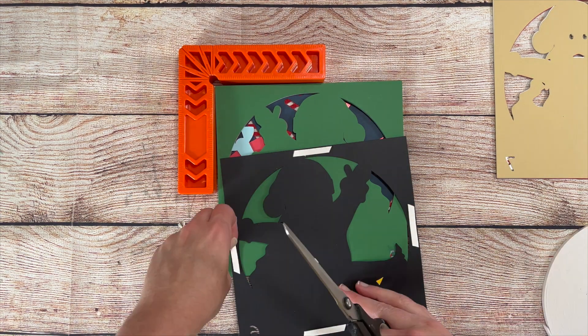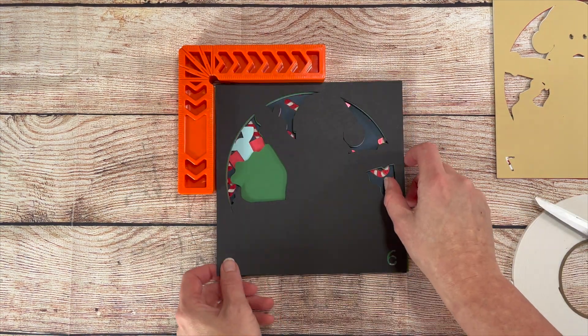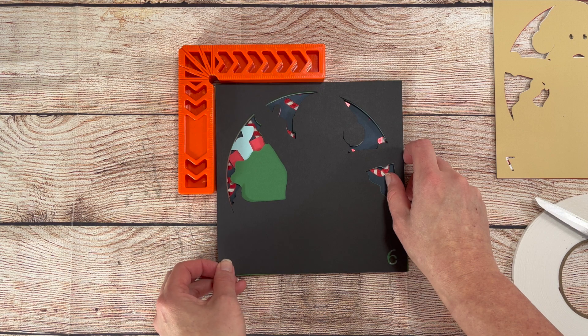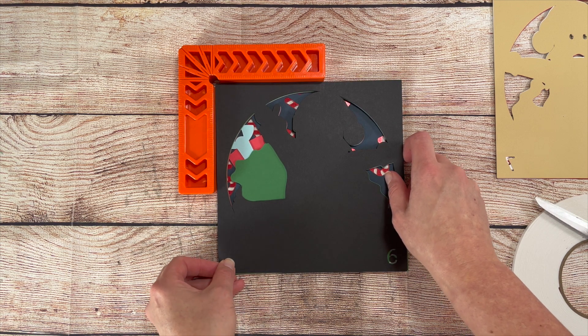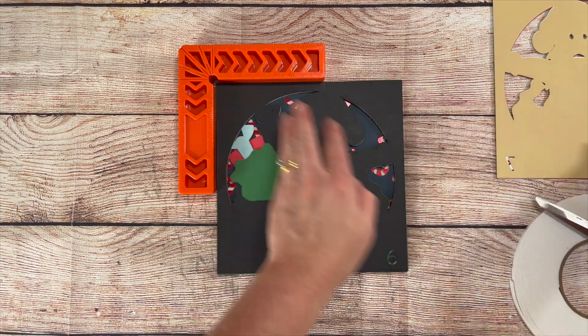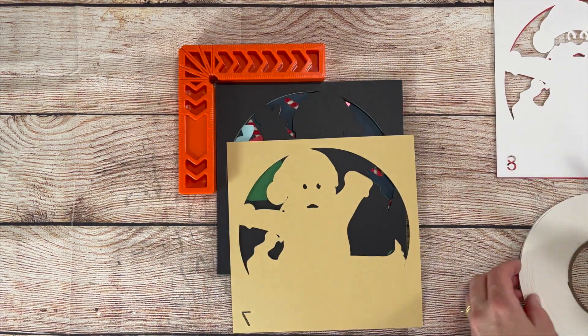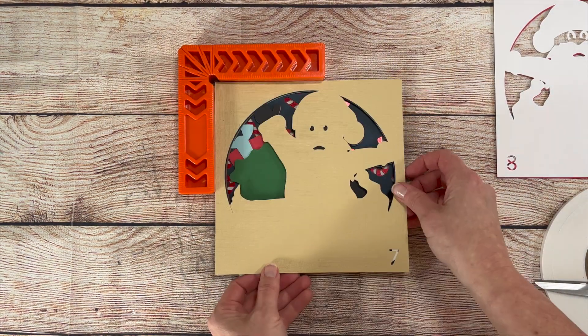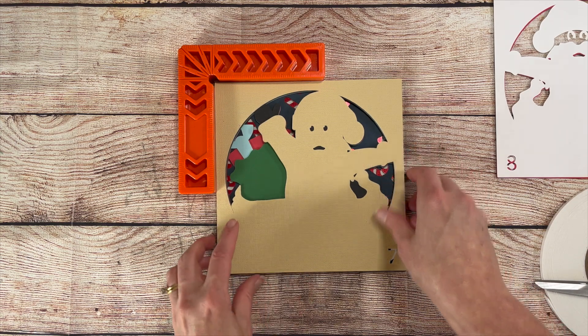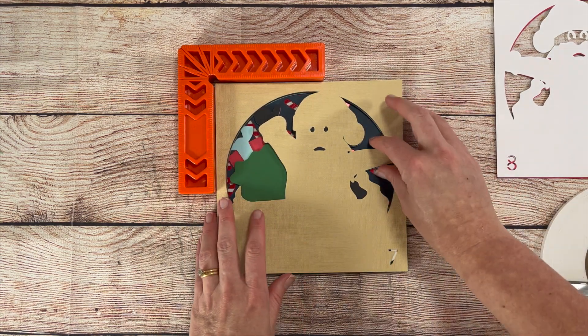I use both a Cricut and a Silhouette while cutting, so I'm familiar with both and can answer any questions you might have. For the Silhouette, I use a custom setting of Blade Depth 5, Force 20, Passes 2, and Speed 2, and that seems to work for most papers. For the Cricut, I use the Intricate Cardstock setting, and it works great.